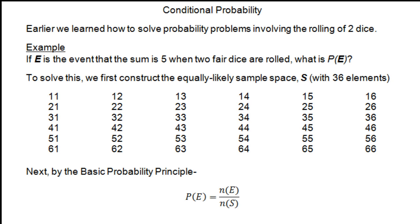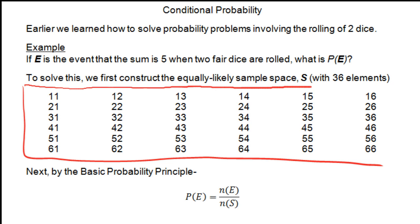The way we solved that was by noticing that we have a 36-element sample space of equally likely outcomes. There are 6 by 6 possibilities, for a total of 36 possibilities, and they're all equally likely. Then we apply the basic probability principle, which says that the probability of an event E is the number of ways E can occur over the number of elements in the sample space.